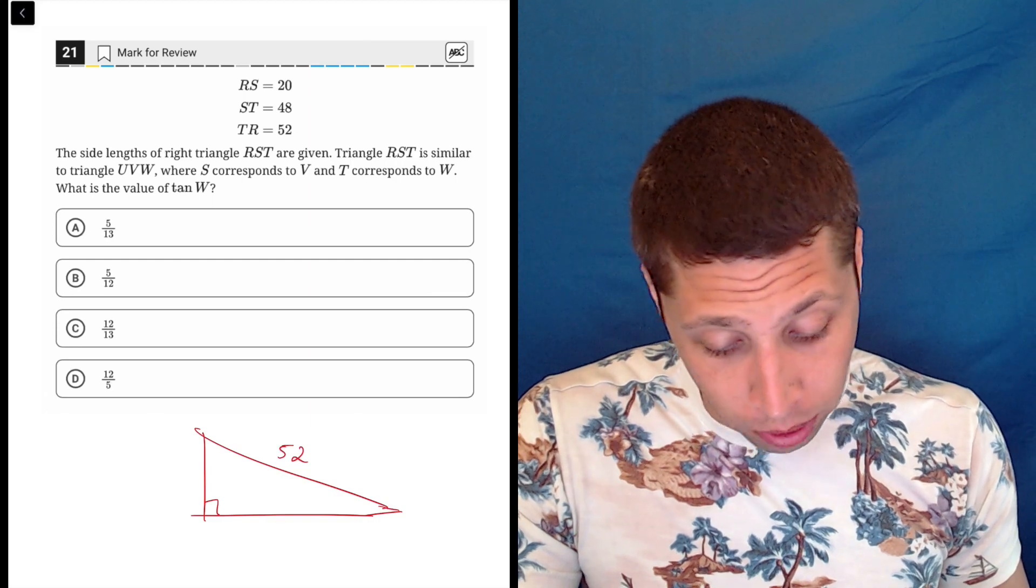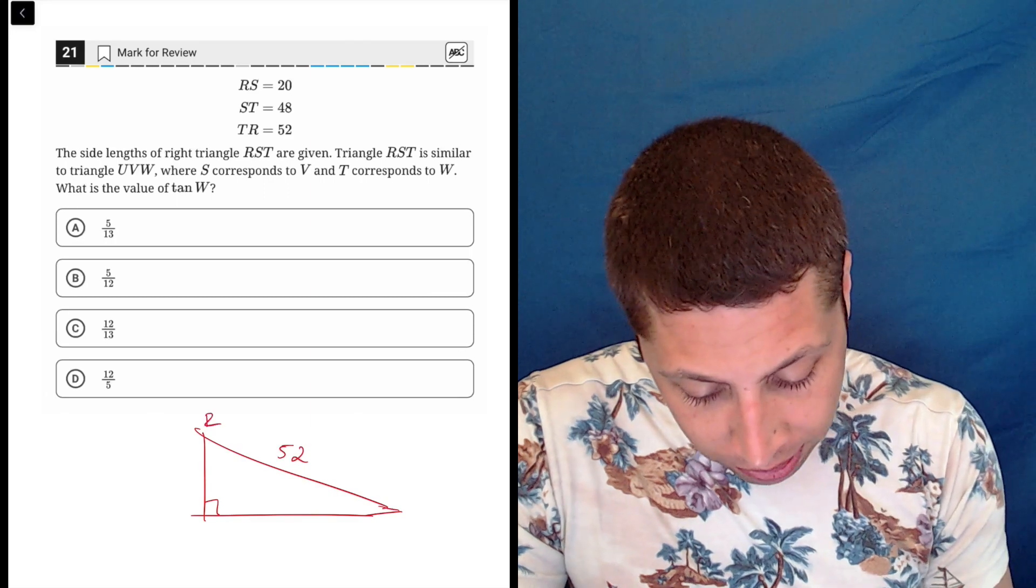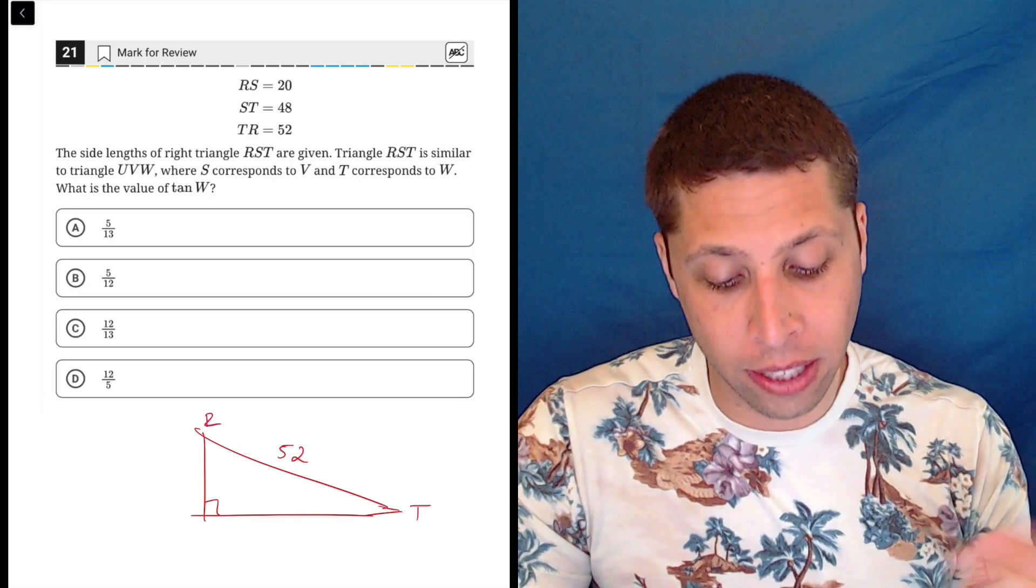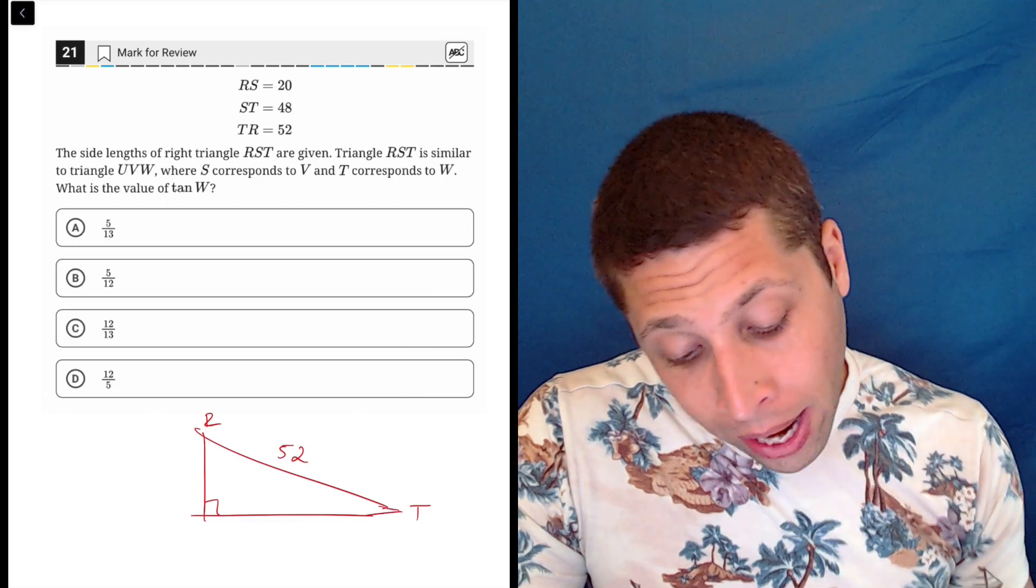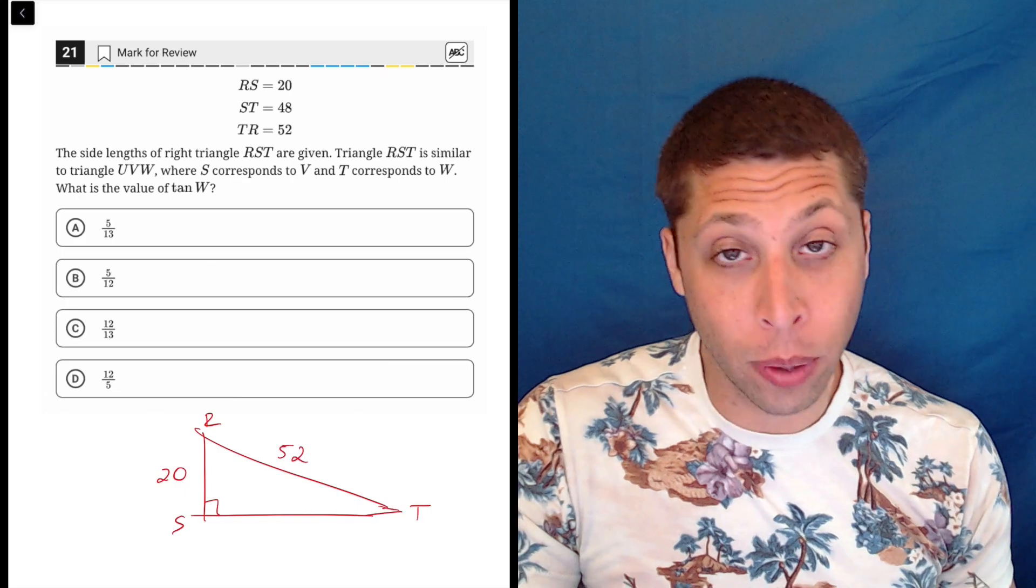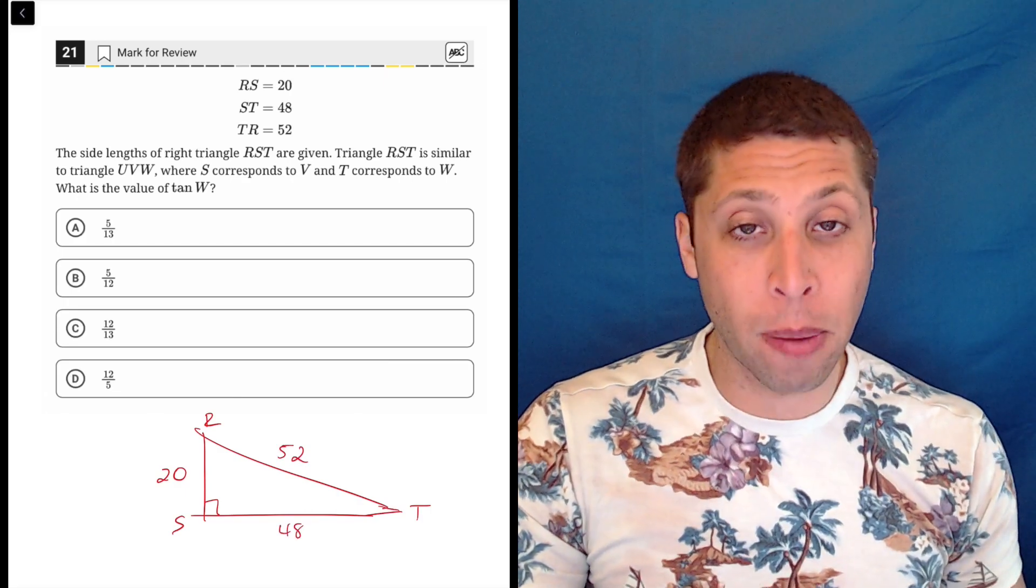Now we just want to label things. You should try to do it so it's drawn to scale, but you don't have to. I'm going to put R up here and T down here because they say TR is 52. RS is my shortest side, so S has to be my right angle so the 20 can go here. And then ST would be 48, and that makes sense. So there's my shape.